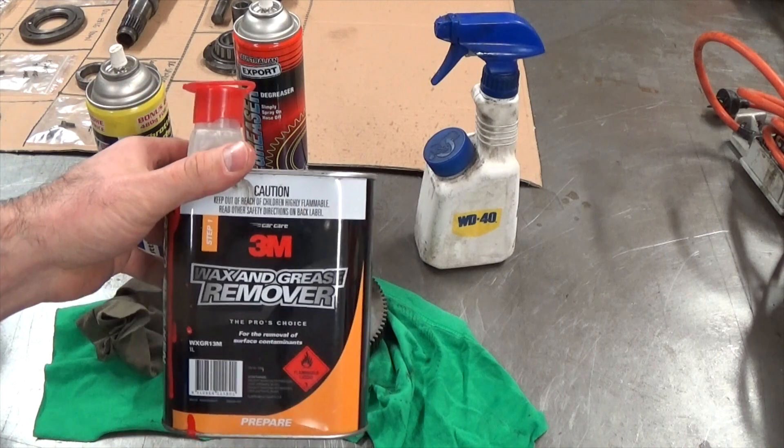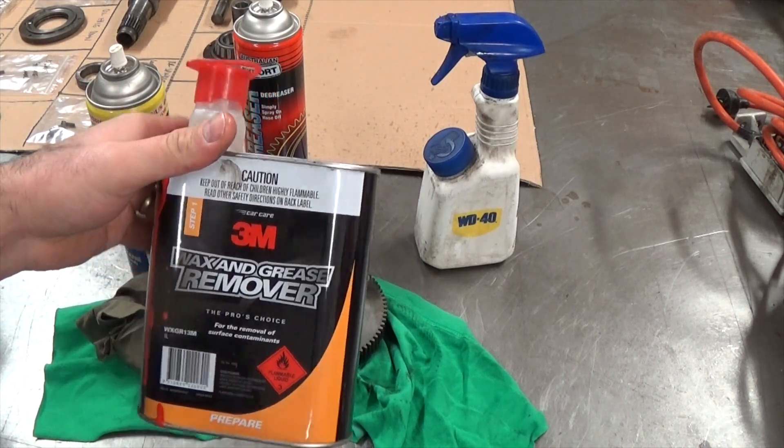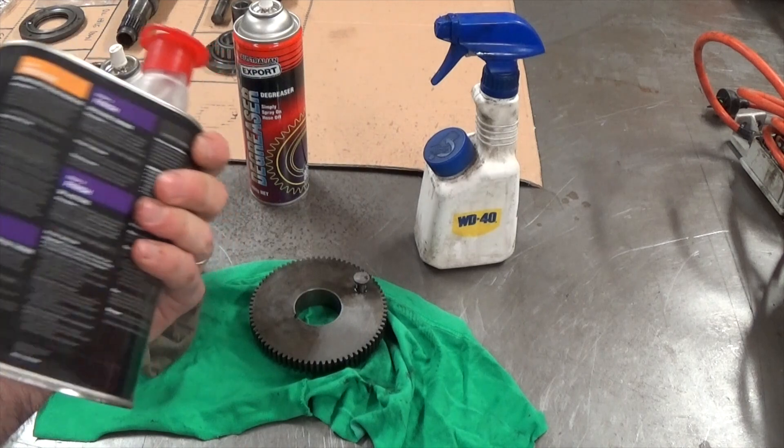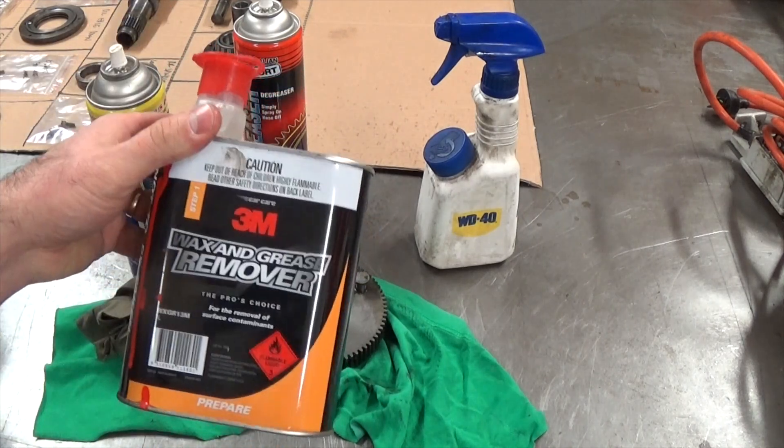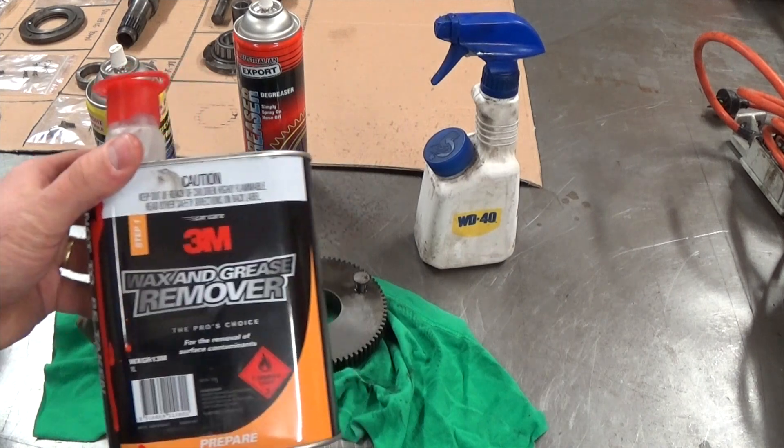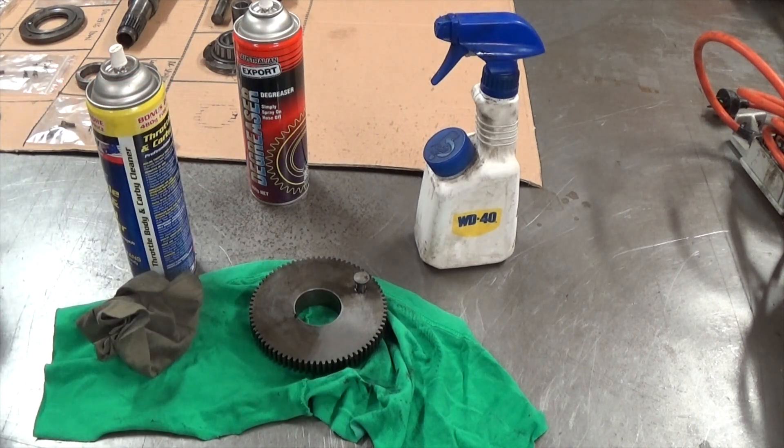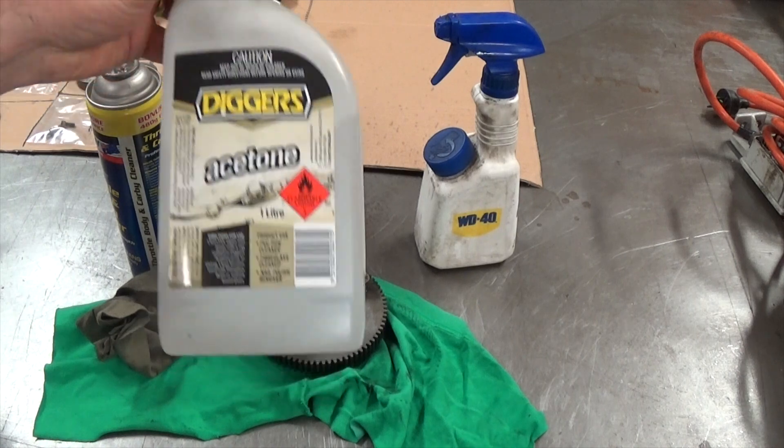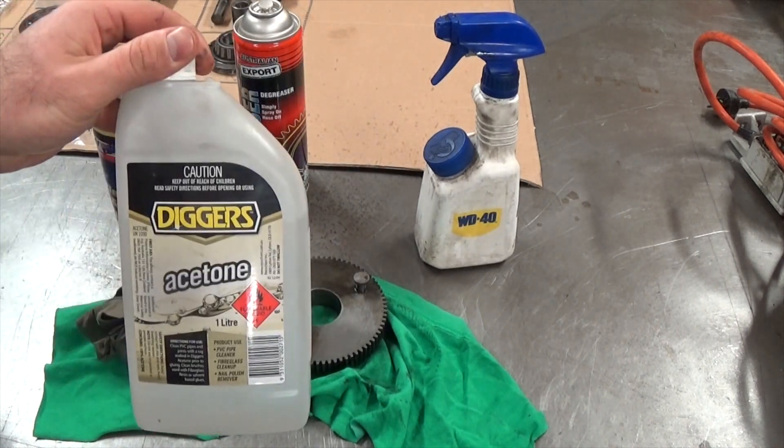Wax and grease remover, you generally use this when you're painting, prior to painting, but it does a pretty good job as well. Again not necessarily very cheap so I don't use a lot of it. Acetone is also pretty popular, well for me it is. I use it for cleaning parts before I weld them.